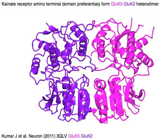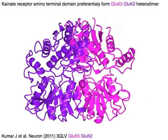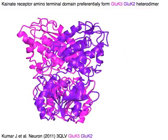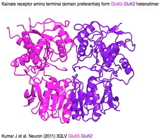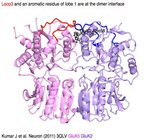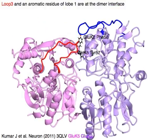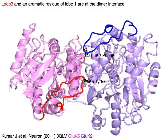Kainate receptor Amino Terminal Domain preferentially forms a GLU-K5 in magenta and GLU-K2 in purple heterodimer. Loop 3 in red and blue, and aromatic residues, are at the dimer interface.